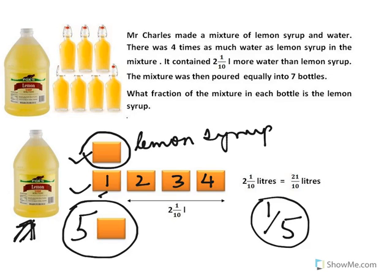Now if you pour this mixture into two bottles or four bottles or six bottles, it does not matter. Each of the bottles will have the same fraction, the same ratio of lemon syrup and water. The ratio of lemon syrup and water, whether it is poured into two bottles or four bottles or seven bottles or ten bottles, the ratio remains the same. So the answer of what fraction of the mixture in each bottle is the lemon syrup is one by five.